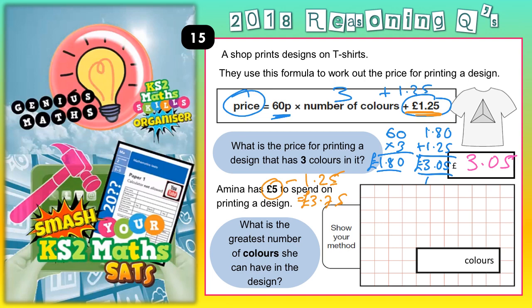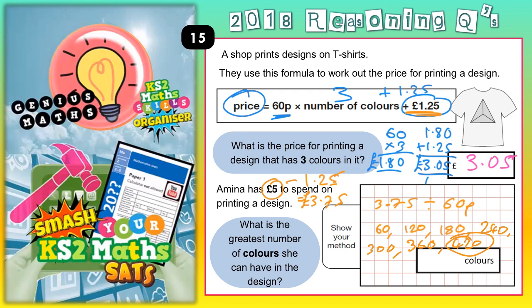So the question is: how many 60ps can go into £3.75? £3.75 divided by 60p. The easiest way is just by counting up in 60s. One colour: 60p. Two colours: £1.20. Three: £1.80. Four: £2.40. Five: £3.00. Six: £3.60. Seven would be £4.20 — but £4.20 has gone over the £3.75 we have left to spend, so it can't be seven colours.